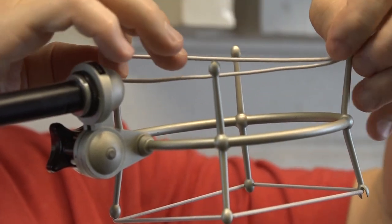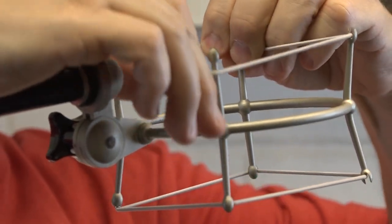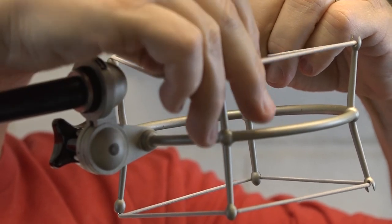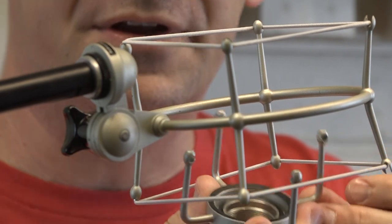The opposite side, stretch them across. There we go. Alright, so then you take the bottom. You have these little hooks inside here.